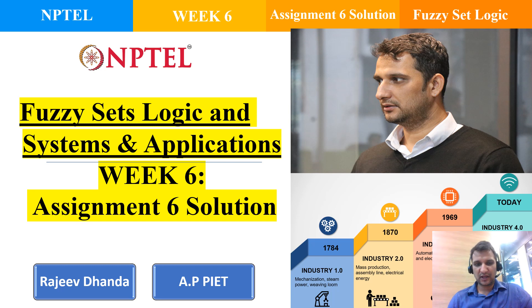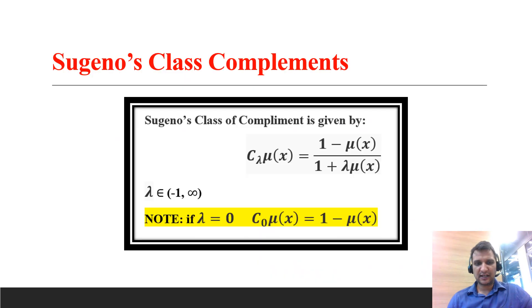Hello everyone. Today we will discuss Assignment 6 for the course Fuzzy Set Logic and System and Application. In this assignment, there are two formulas used: Sugeno's class of complement and Yager's class of complement.